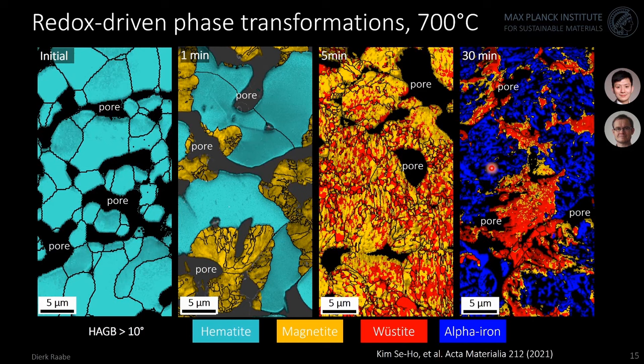Another technique we pursue is hydrogen-based plasma smelting reduction, where iron oxide is exposed in a liquid state to a plasma consisting of different fractions of hydrogen and argon. The hematite is smelted — its melting point is only 50 K higher than that of iron — and reduced in the molten plasma-excited exothermic state. Due to the factor-of-two mass difference, iron sinks down and can be gathered, making this a very efficient method for producing green steel.